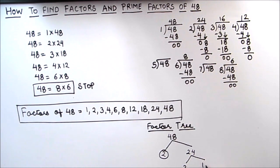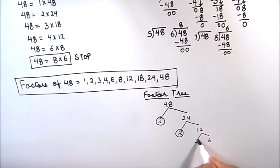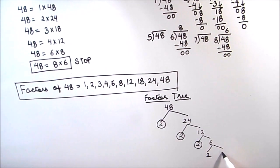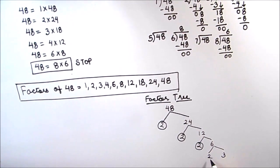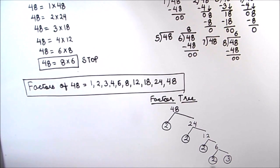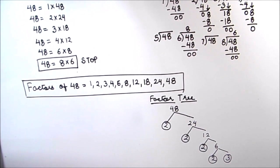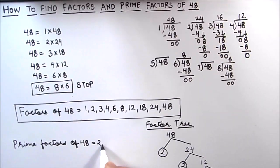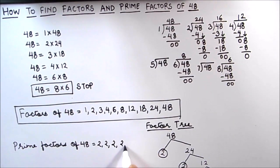24 can be written as the product of 2 times 12, and 2 is a prime number so we circle 2. 12 can be written as the product of 2 and 3, and here both 2 and 3 are prime numbers, so we circle both. All the circled numbers are the prime factors of 48. The prime factors of 48 are 2, 2, 2, 2, 2, and 3.